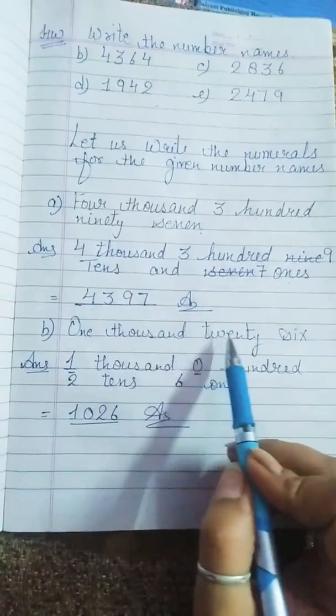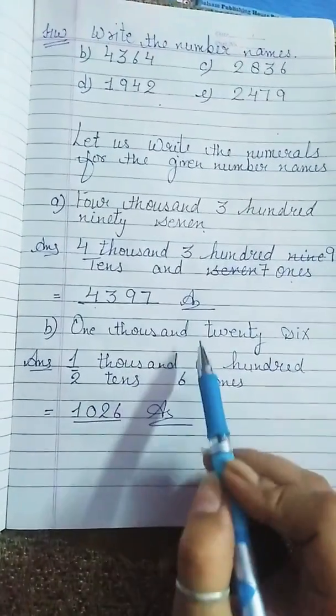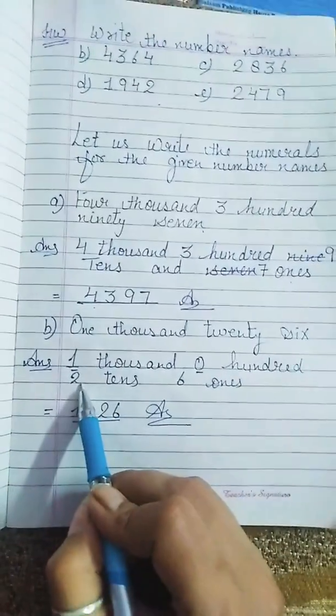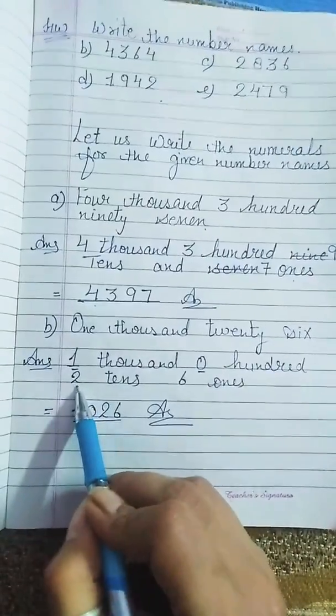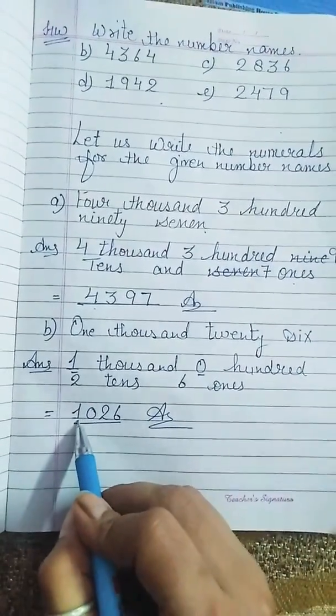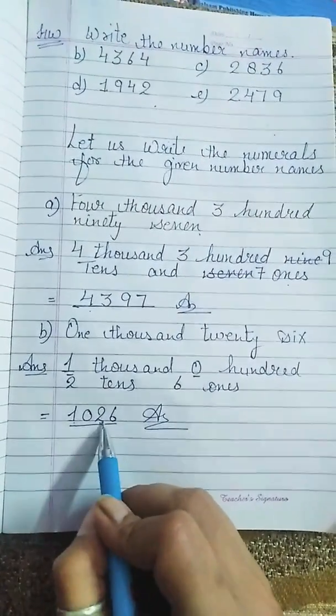Now, one thousand, twenty six. Toh, one thousand, hundred me toh kuch hai ni. Toh, we will write zero hundred, two tens. Twenty tha na, toh, twenty ka kya aagaya? Two tens, and six ones. Toh, our answer will be, one thousand, twenty-six. Yani, one, zero, two, six.